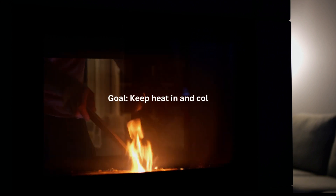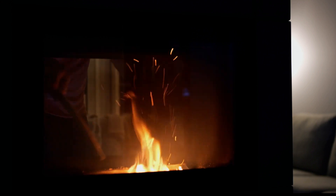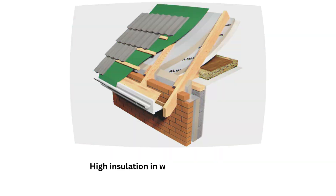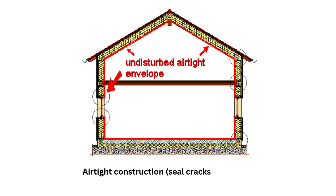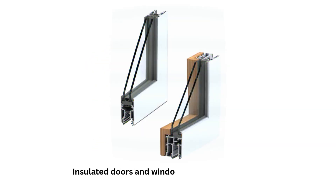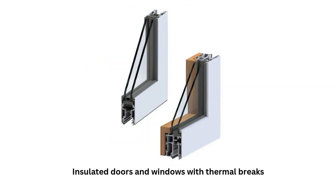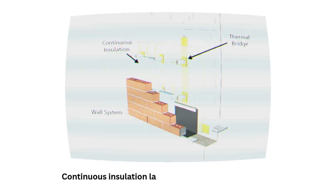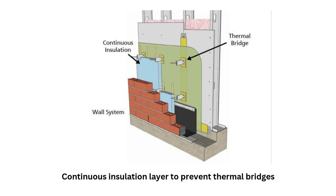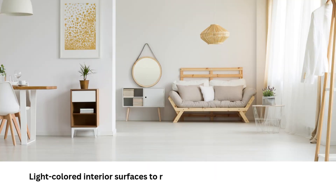Building envelope and insulation: the goal is to keep heat in and cold out. Use high insulation in walls, roofs, and floors, with airtight construction to seal cracks and joints. Insulated doors and windows with thermal breaks and a continuous insulation layer help prevent thermal bridges. Light-colored interior surfaces reflect sunlight deeper into the space.